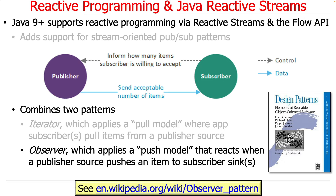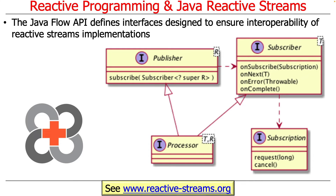Those are the two key patterns relevant in the context of reactive streams and the Flow API. The Flow API itself is actually pretty simple — it defines four interfaces: publisher, subscriber, subscription, and processor, which is a combination of a publisher and a subscriber. The publisher has a subscribe method that subscribers can use to subscribe, and subscribers have callback methods that publishers or processors will call to dispatch events to them. There's also a hook method called onSubscribe, which lets the publisher notify the subscriber it's been subscribed and lets the subscriber indicate how much data it wants sent in one chunk.